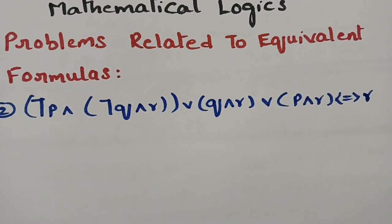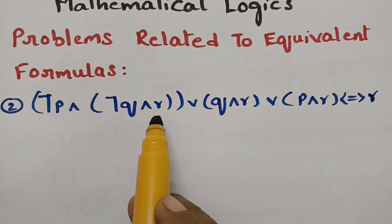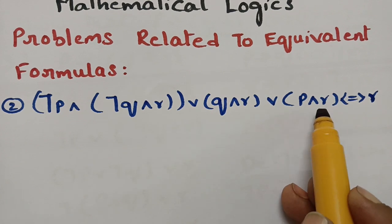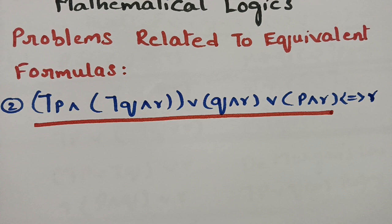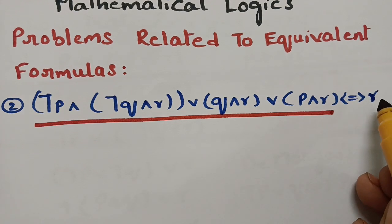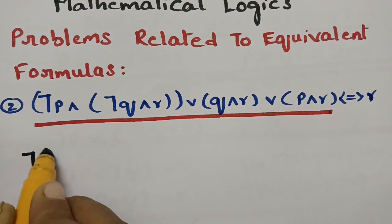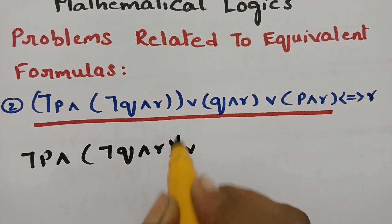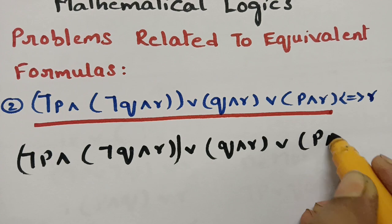The next problem: show that (negation P and negation Q and R) or (Q and R) or (P and R) is equal to R. The LHS part is very lengthy and the RHS is simply R. We take the whole LHS — which is (negation P and negation Q and R) or (Q and R) or (P and R) — and apply the equivalent formulas.